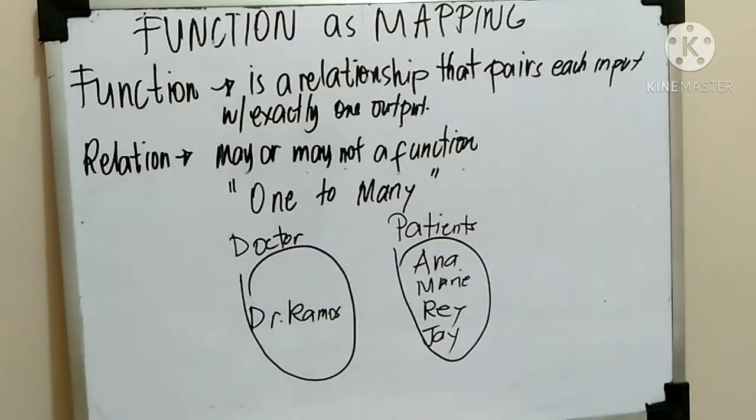So, diba, one to many kasi si Dr. Ramos naging isa lang din yung marami siyang patients. Now, i-arrow diagram na natin, connect natin. Si Dr. Ramos, patient niya number one si Ana. Next si Marie. Next si Ray. Then Jay.